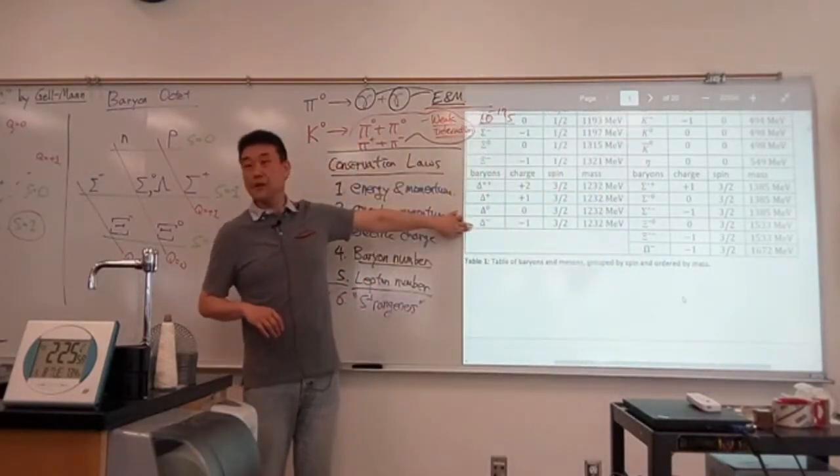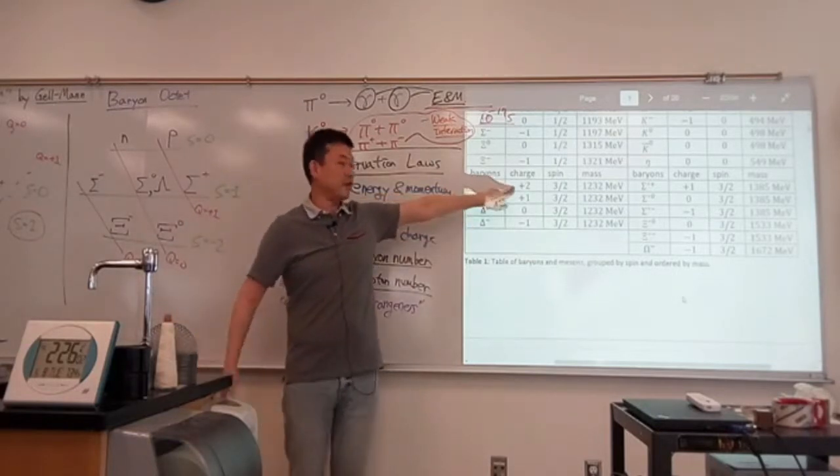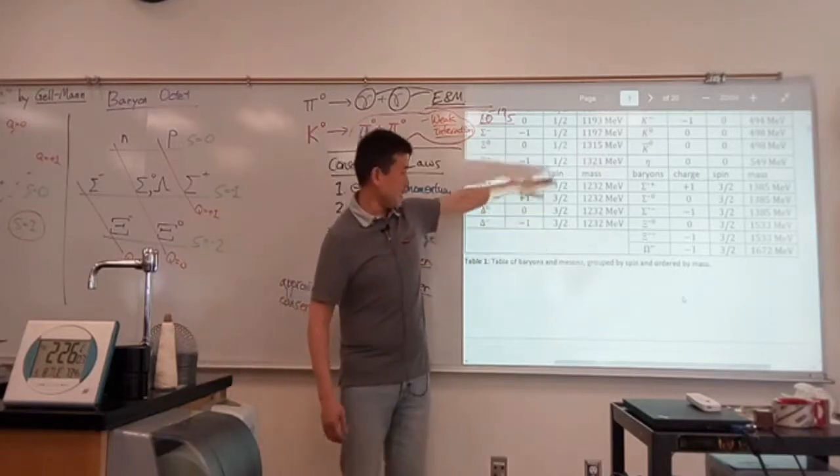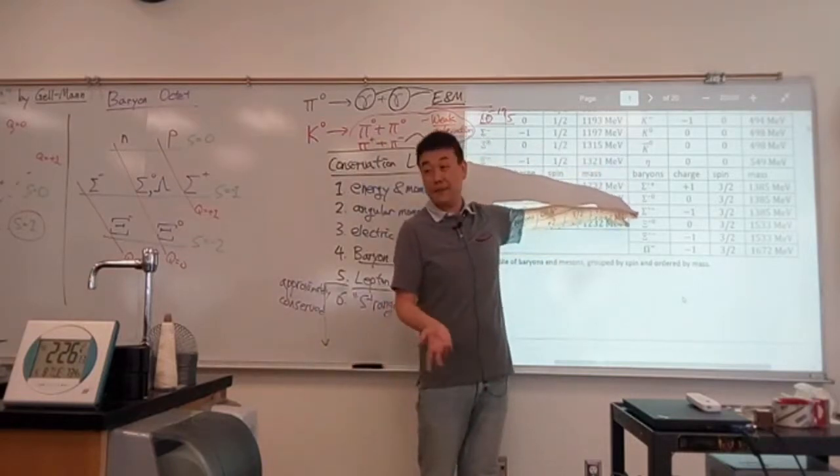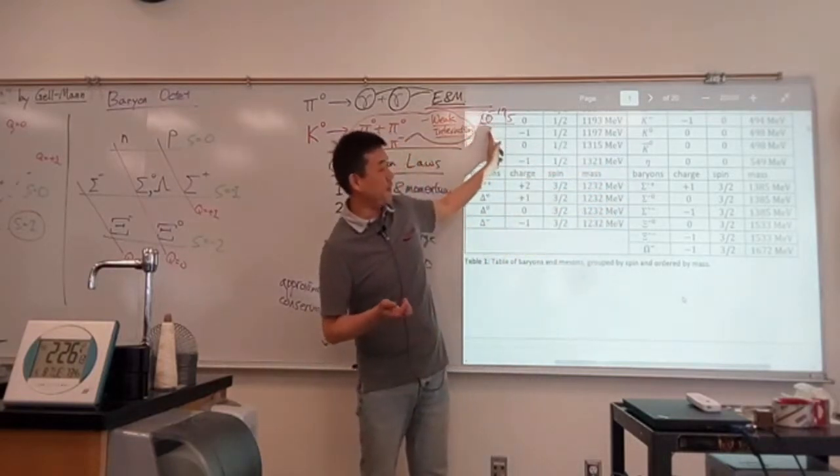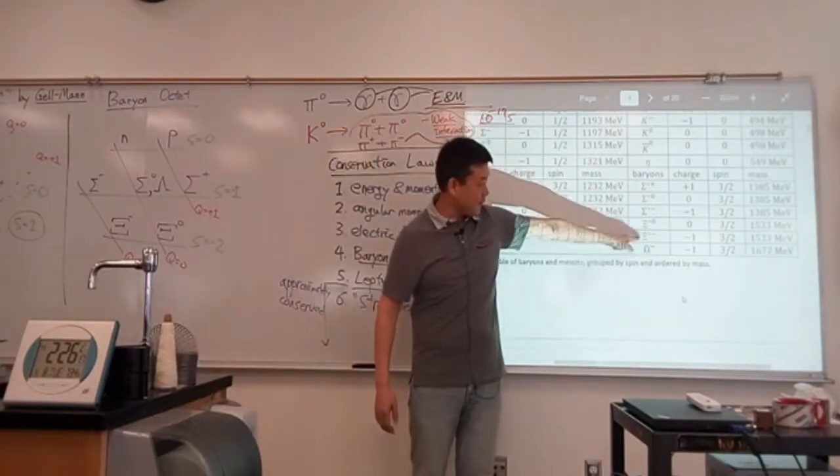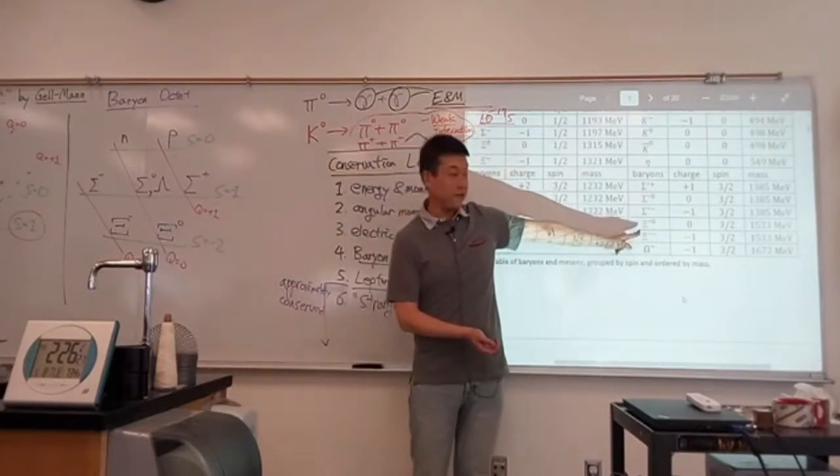So, delta baryons, all spin three-half, and apparently there's one with a charge of plus two, but no charge of minus two. So, delta baryons, and there's the sigma baryons that are somehow different from the previous sigma baryons, because they're heavier. And there's xi-baryons again, but somehow different from these, because they're also heavier.